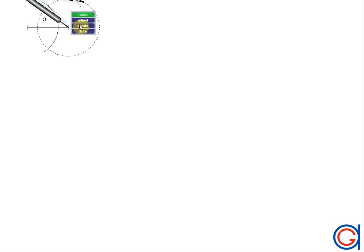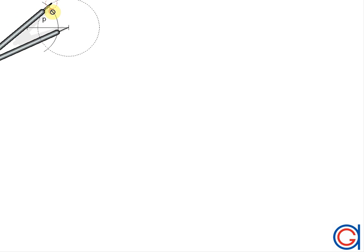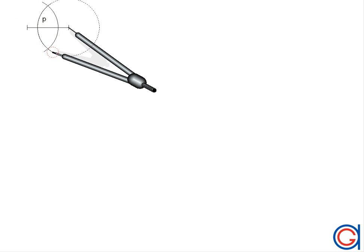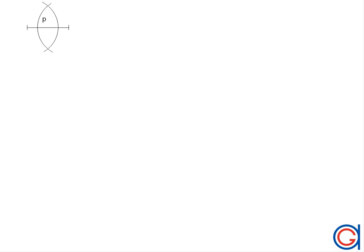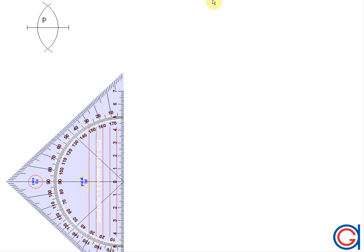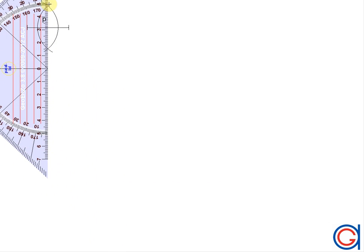We scribe a second arc to intersect our previously drawn arc above and below the line segment P, as shown here in the video. Now we are going to join our intersecting arcs with a line, and this line cuts the line segment P at midpoint M. So now we have calculated half of our line segment P.